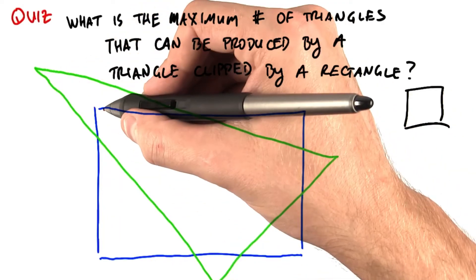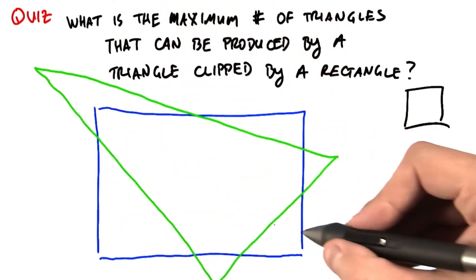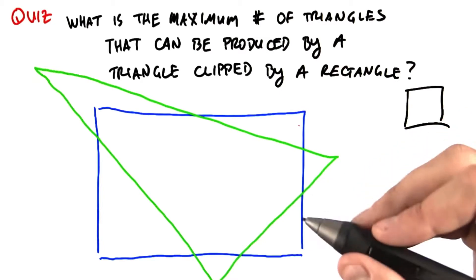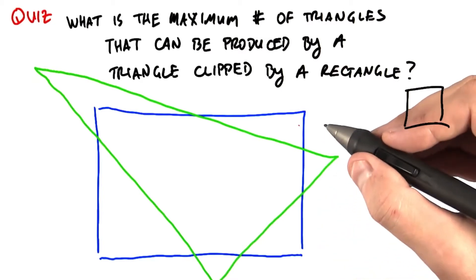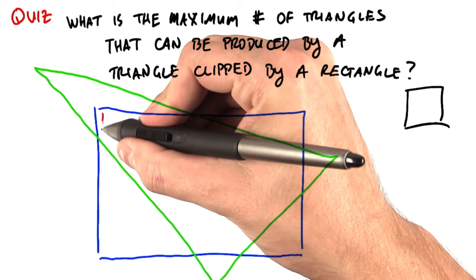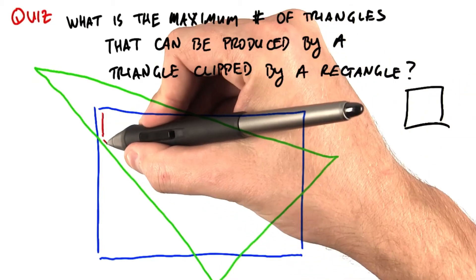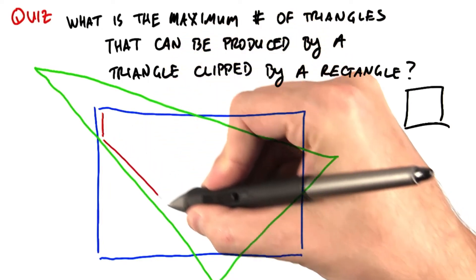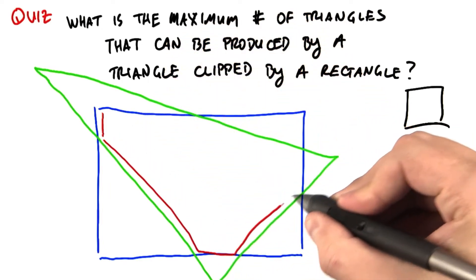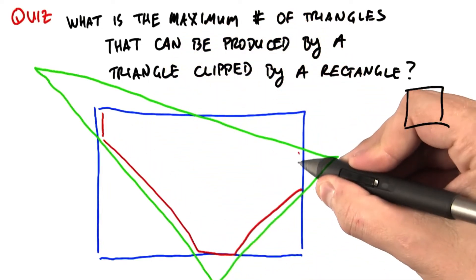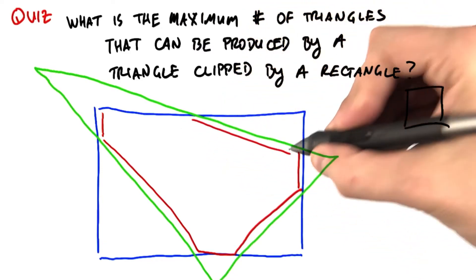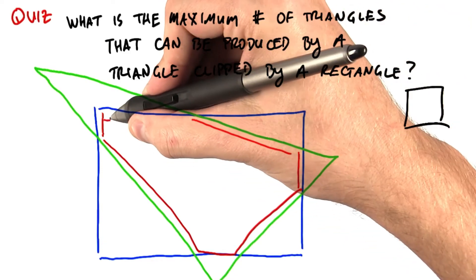So here's the worst case. We have a green triangle clipped by a blue rectangle. How many sides is the resulting polygon? So 1, 2, 3, 4, 5, 6, 7.